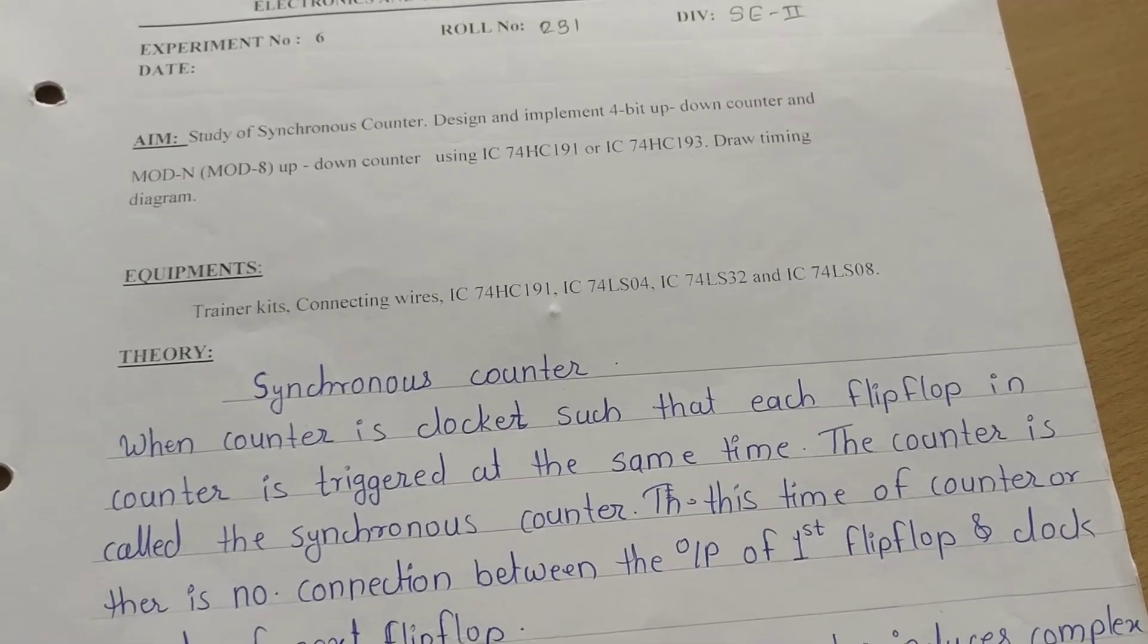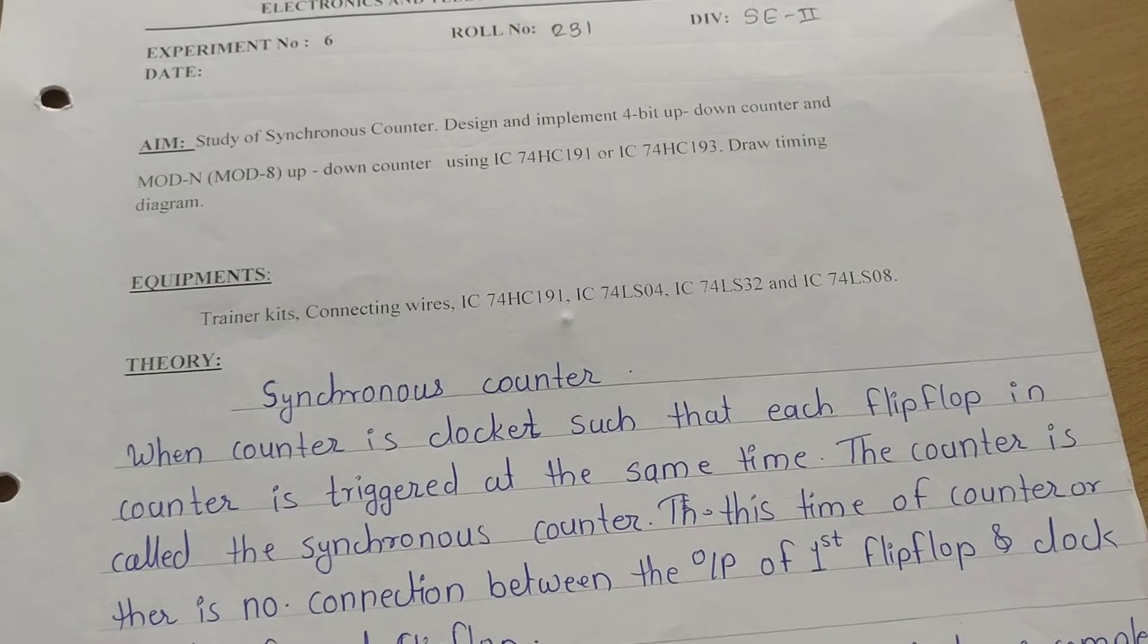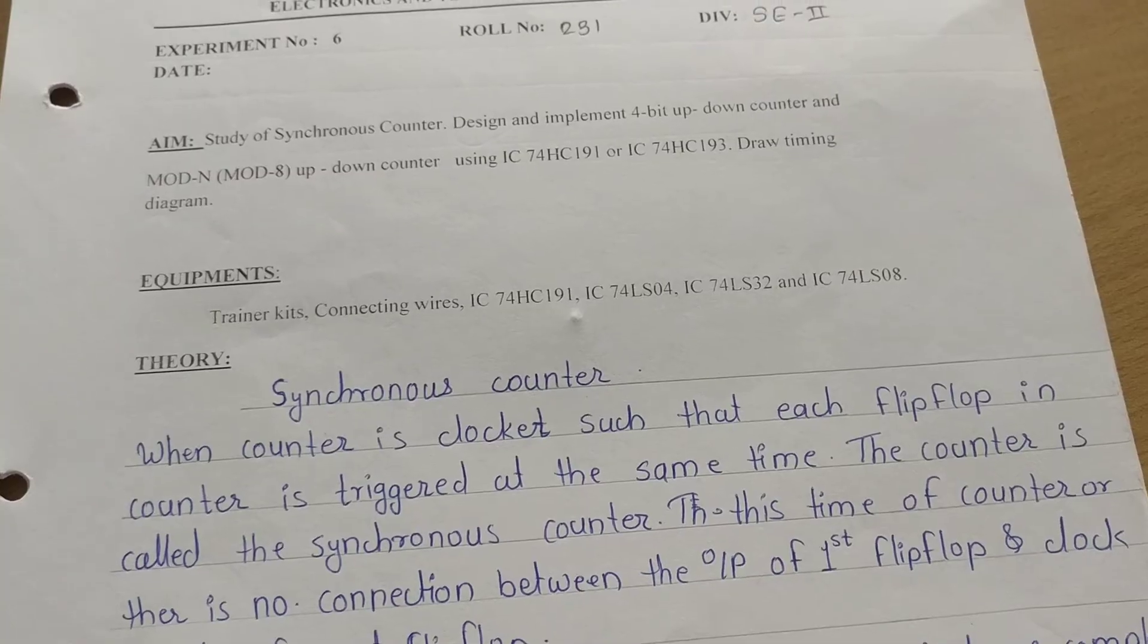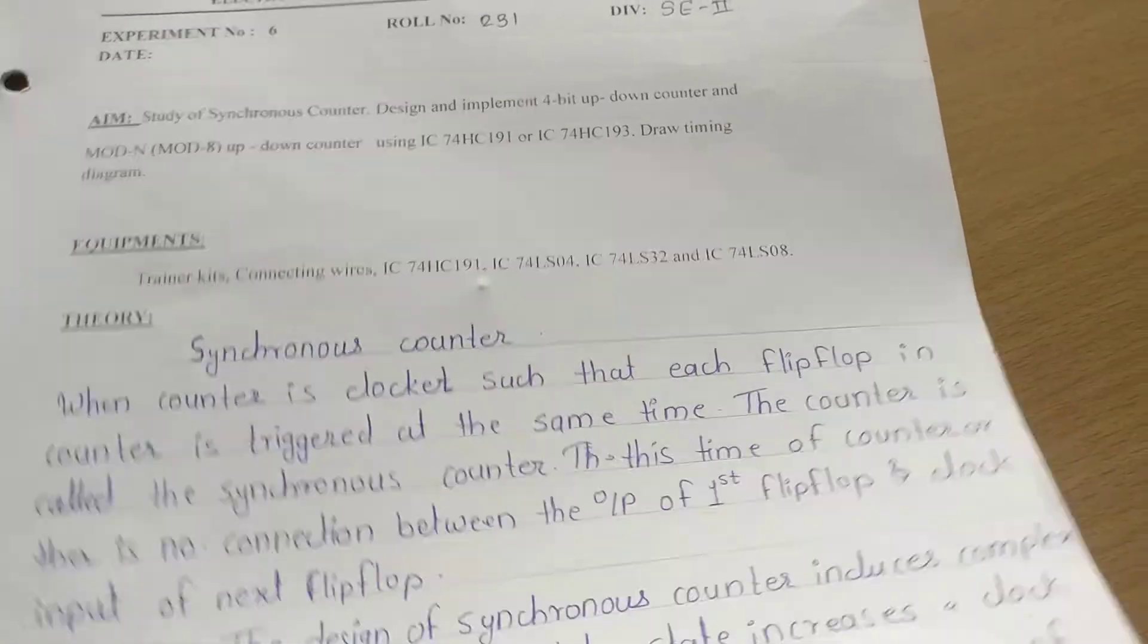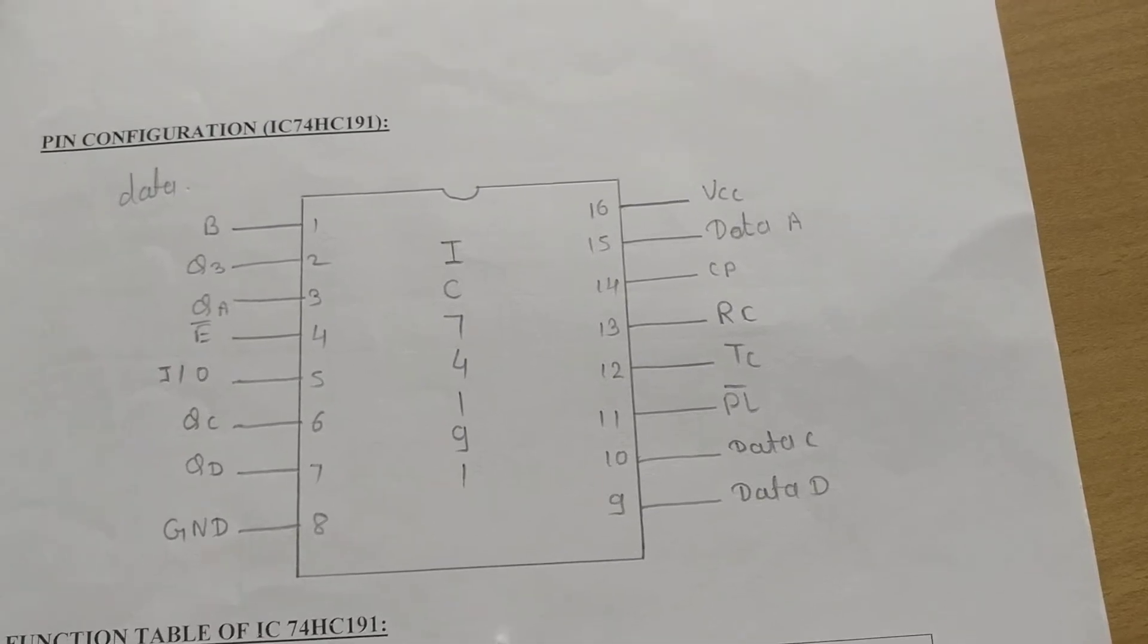In this we are going to have two parts. First part is 4-bit up-down counter and second part is a mod 8 up-down counter. First we will see the pin configuration of 74191. This is a 16-pin IC.